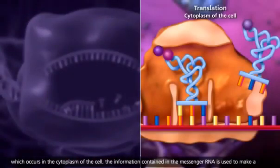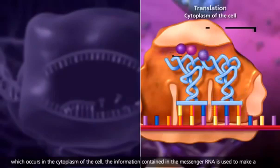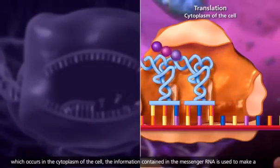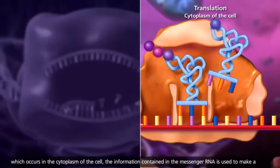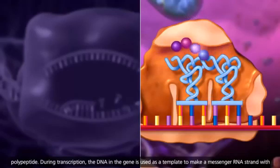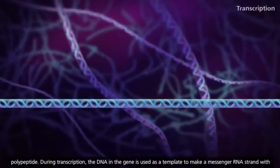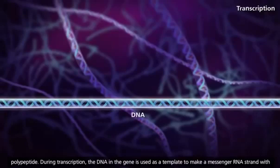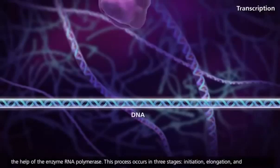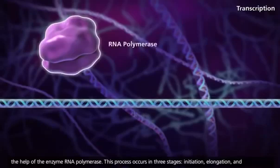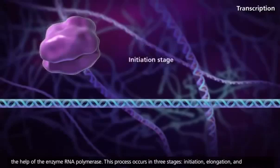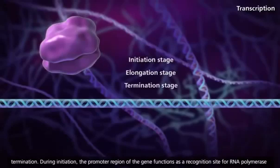Then in translation, which occurs in the cytoplasm of the cell, the information contained in the messenger RNA is used to make a polypeptide. During transcription, the DNA in the gene is used as a template to make a messenger RNA strand with the help of the enzyme RNA polymerase. This process occurs in three stages: initiation, elongation, and termination.